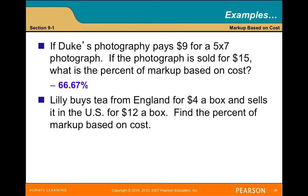Lily buys tea from England for $4 a box and sells it in the U.S. for $12 a box. Find the percent of markup based on cost — 200%. She buys the tea for $4, so $4 equals 100%. If she sold it for $8, the markup would be 100%, but she sells it for $12, so the markup is 200%. That's something to keep in mind: markup is not the same as profit in many cases.